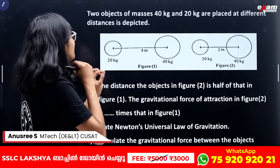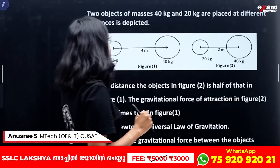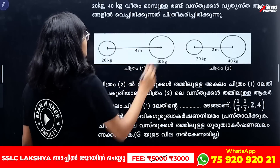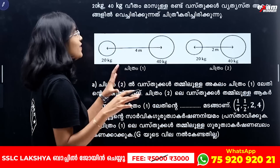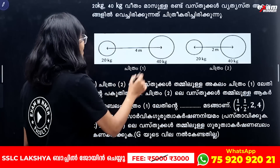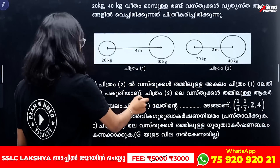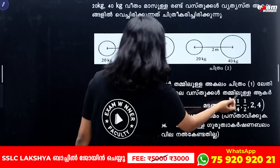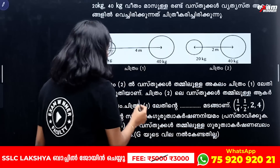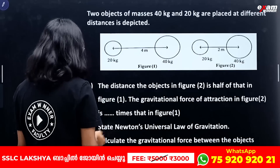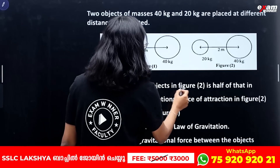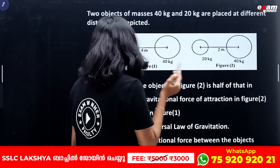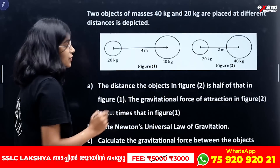Two objects of mass 40 kg and 20 kg are placed at different distances as depicted. The distance of the object in figure 2 is half of that in figure 1. The gravitational force of attraction in figure 2 is how many times that in figure 1?